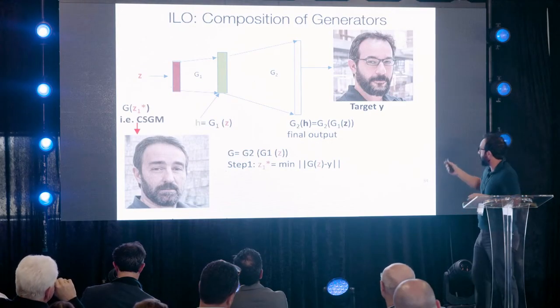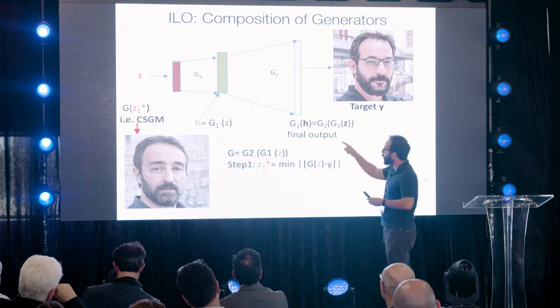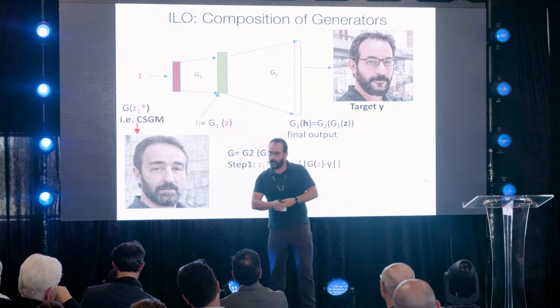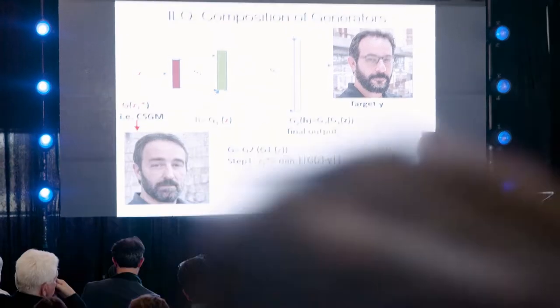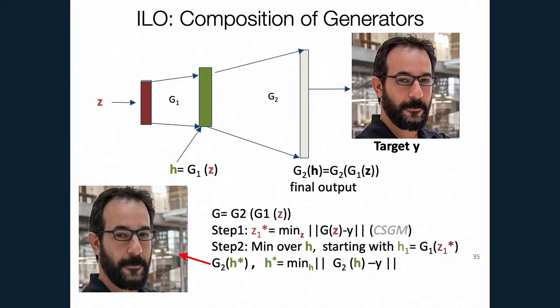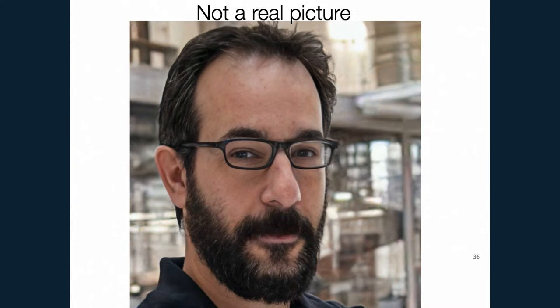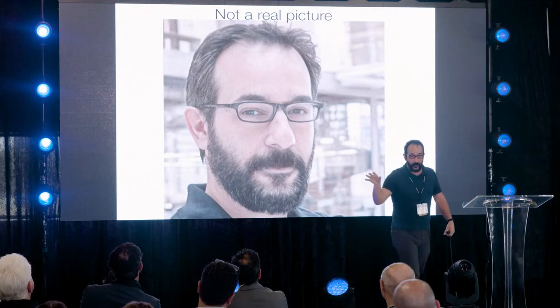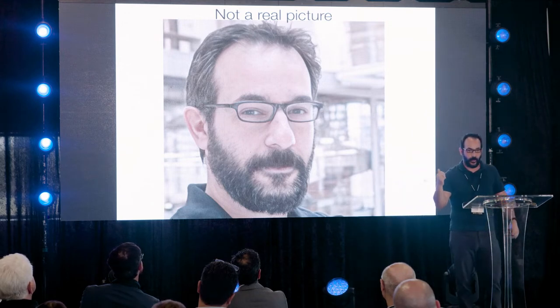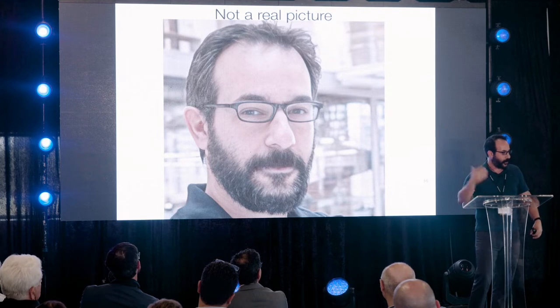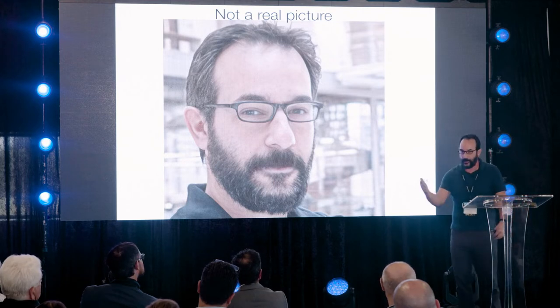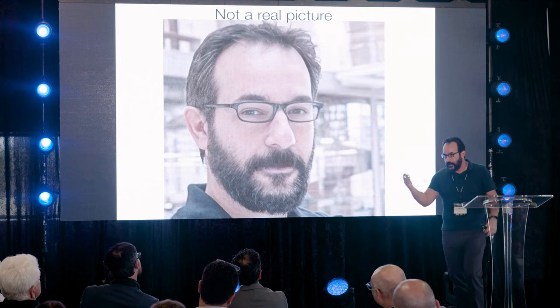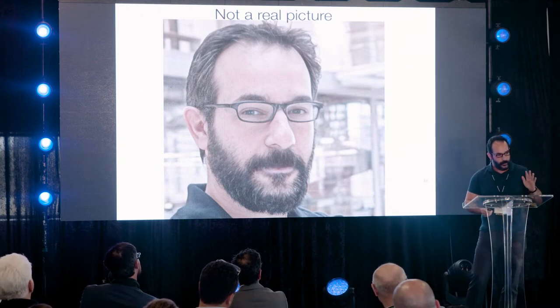Going back, you can see the bias: optimizing the input Z produces a wrong-looking person. Using our new algorithm — optimizing inside the network's internal layers — we get a StyleGAN2-based image. It has a blurred background and a few artifacts, but it really looks like me. There are even interesting legal issues: is this the original image or not? But right now, with internal layer optimization, you can do that.